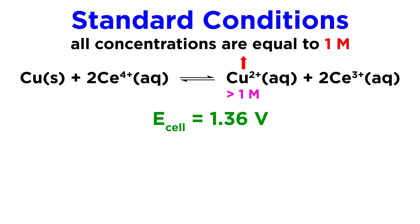Conversely, if we increase the concentration of one of the products, things will shift in the reverse direction, so the cell potential must decrease.